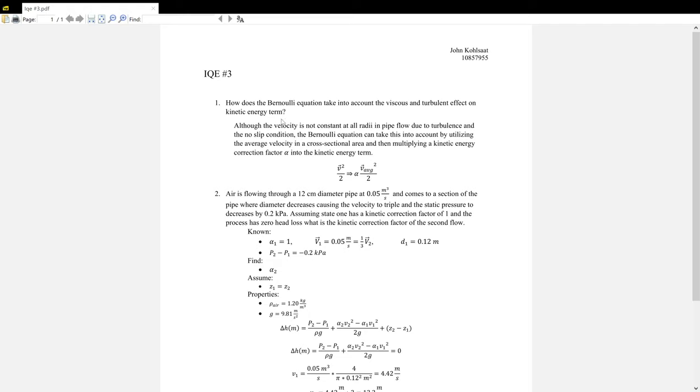How we deal with this is we take the average velocity over a cross-sectional area, and then we add a correction factor, alpha. That allows us to approximate the changing velocity with respect to radius in the kinetic energy term.